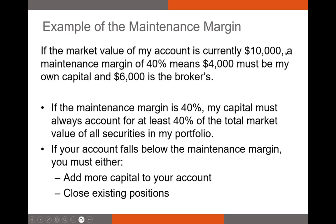If the value of my portfolio falls from $10,000 down to $9,000, I'm still going to owe my broker $6,000, but that means I'll only have $3,000 in equity. So my margin will fall below the maintenance margin, and I'm going to either have to add more capital to my account or start to close my existing positions.